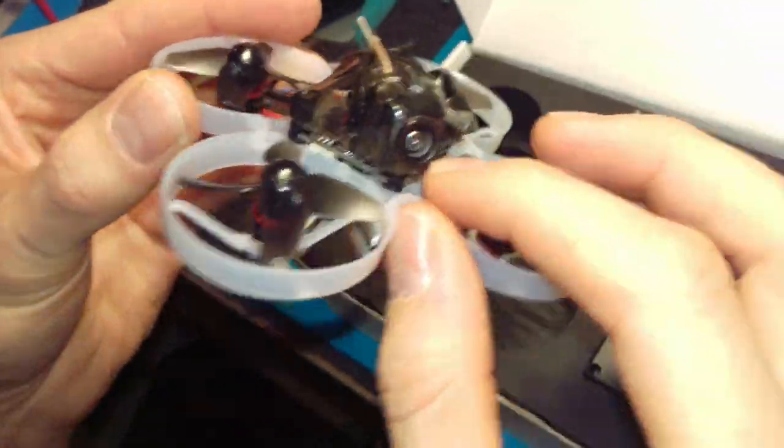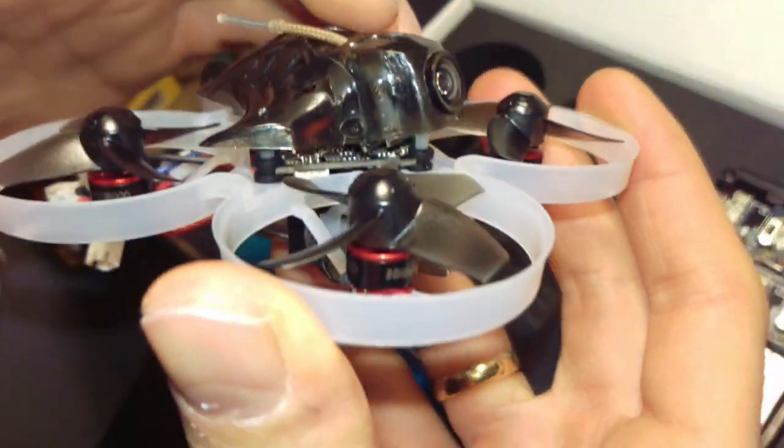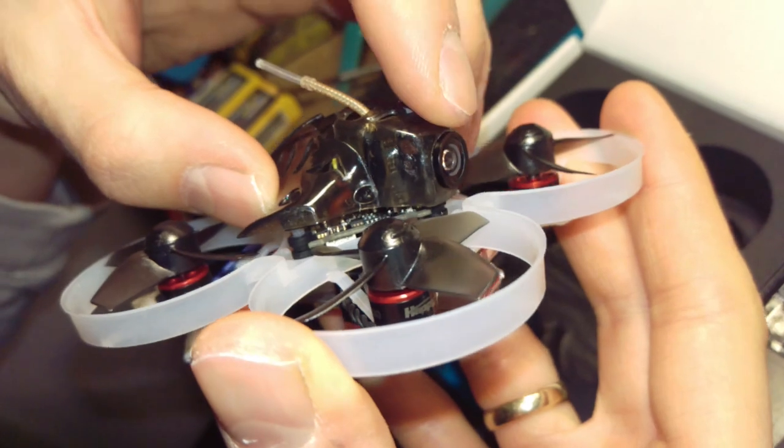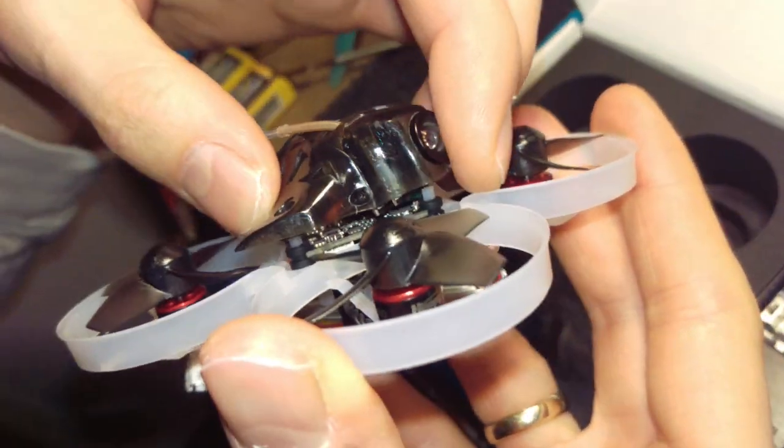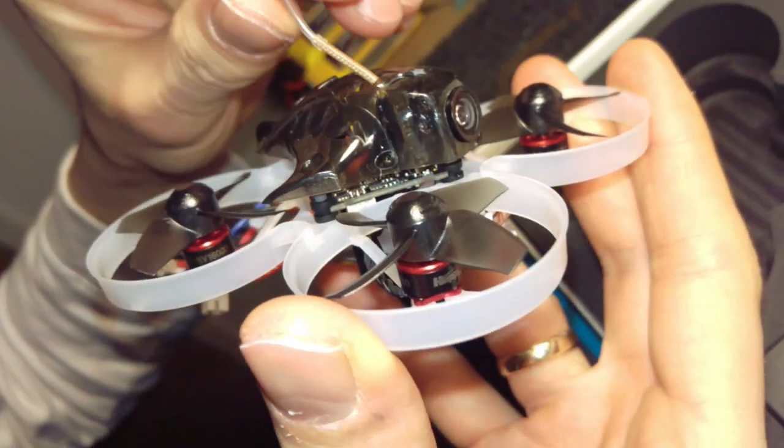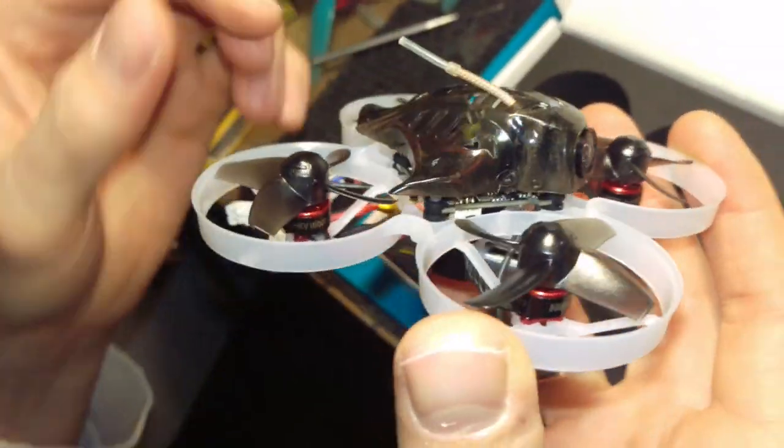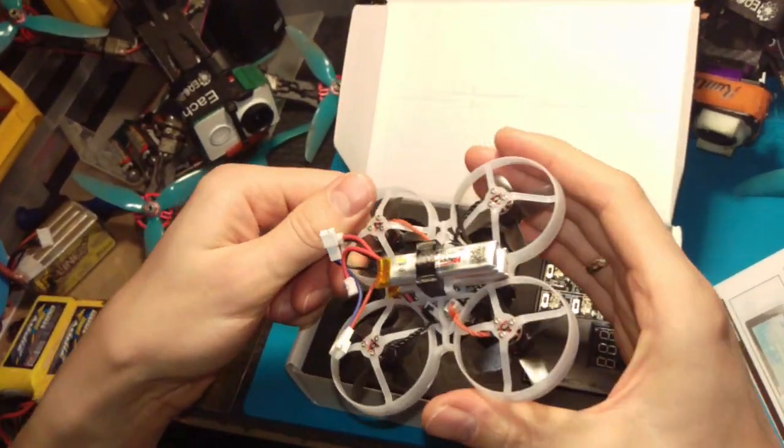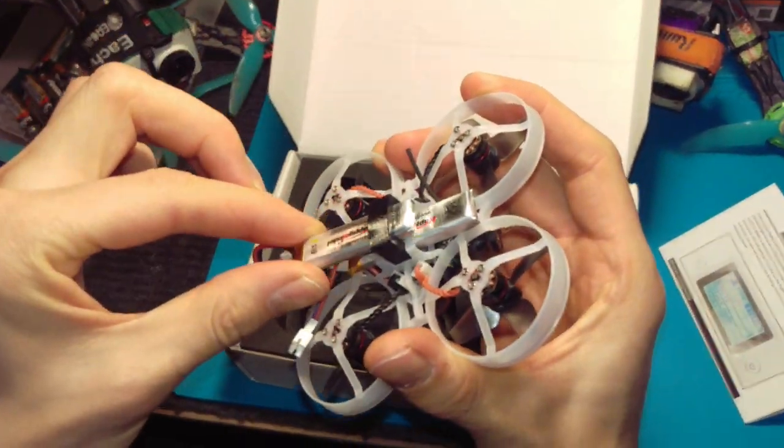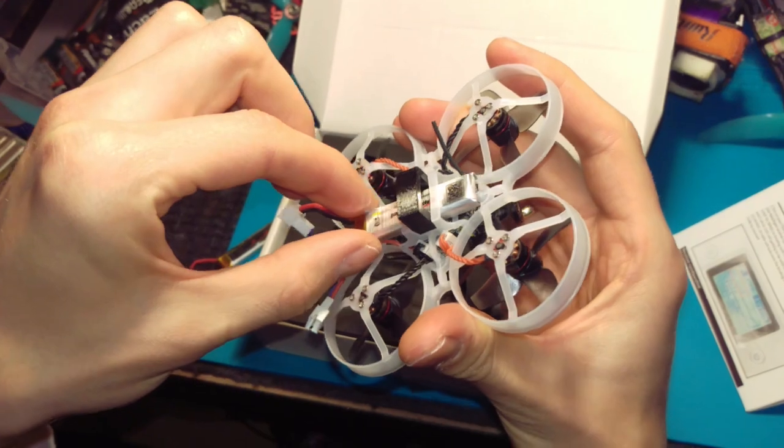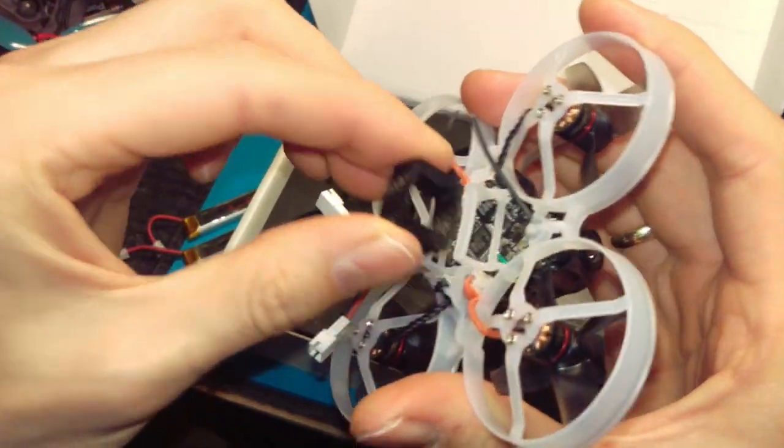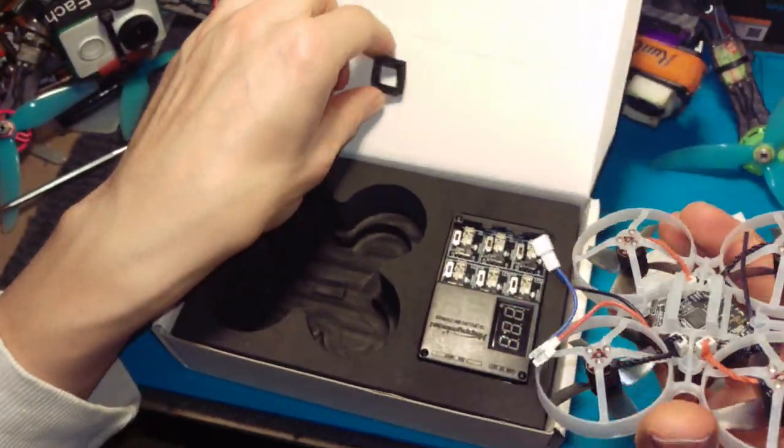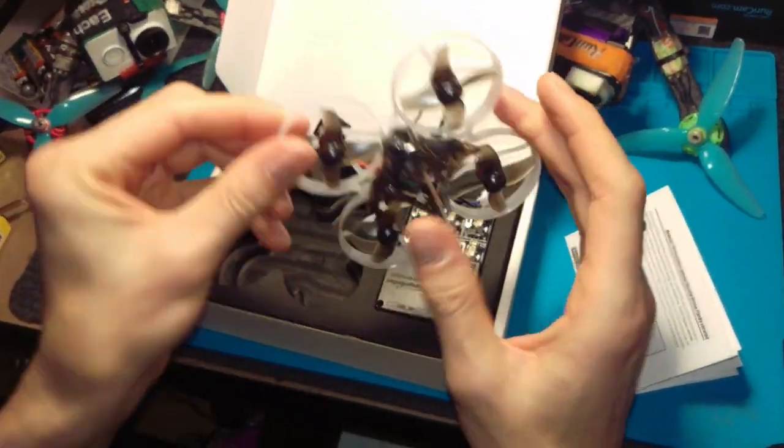As you can see, there's a camera. As far as I know it's adjustable, so you can change your camera angle, which is nice. There's an antenna here, an antenna here, and an antenna here. Two batteries - two 1S batteries - and a 3D printed TPU mount for the batteries. That's it.